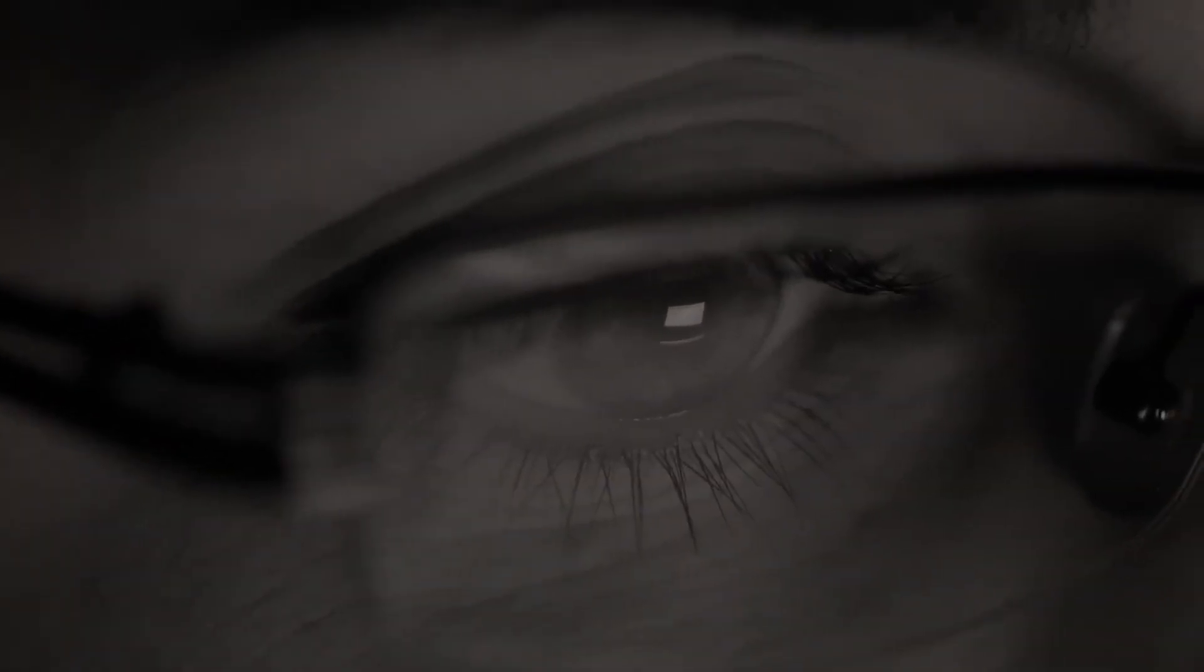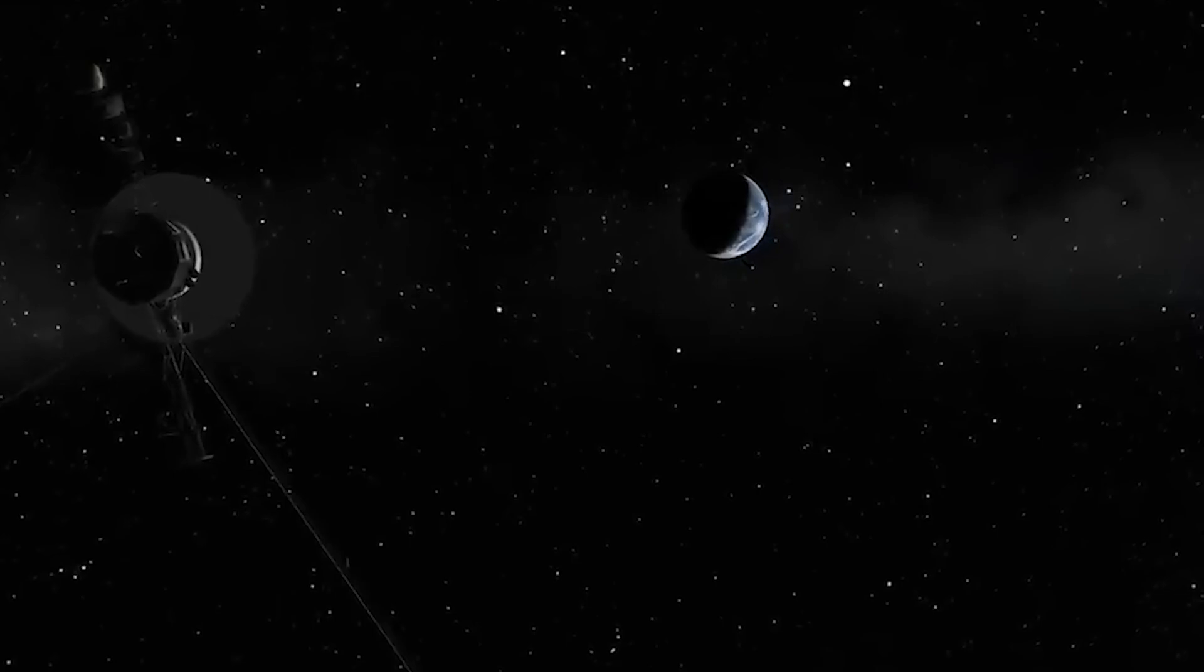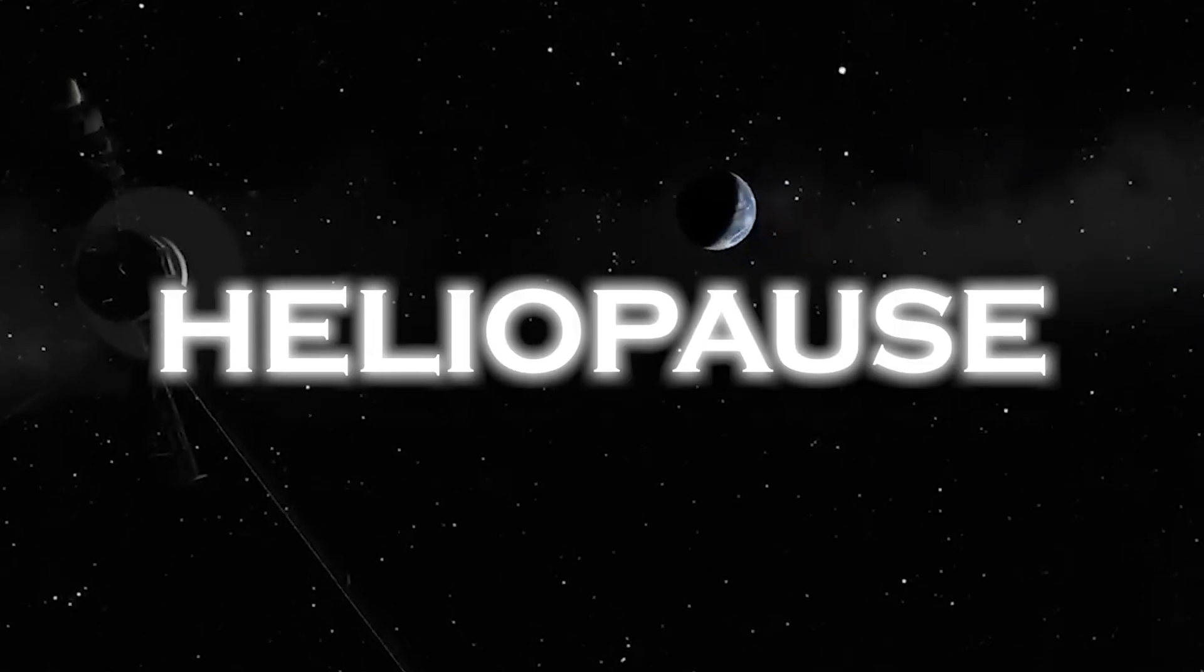Unlike previous years, when we were only able to analyze data within our solar system, thanks to the innovation provided by Voyager, we now have access to data beyond it. In August 2012, Voyager 1 officially crossed the boundaries of the solar system by crossing the heliopause.